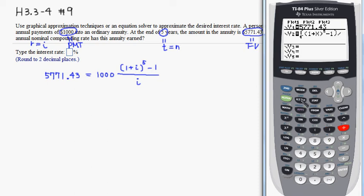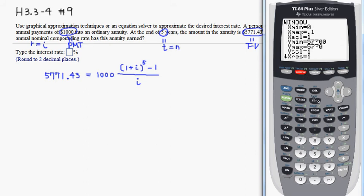Then we have to change the window size a little bit. I would go from x min 0 to 0.1, and the y min would be probably a little bit below 5771, so I'm going to put 5770. And for y max, I'll probably put 5772, slightly larger than the value.